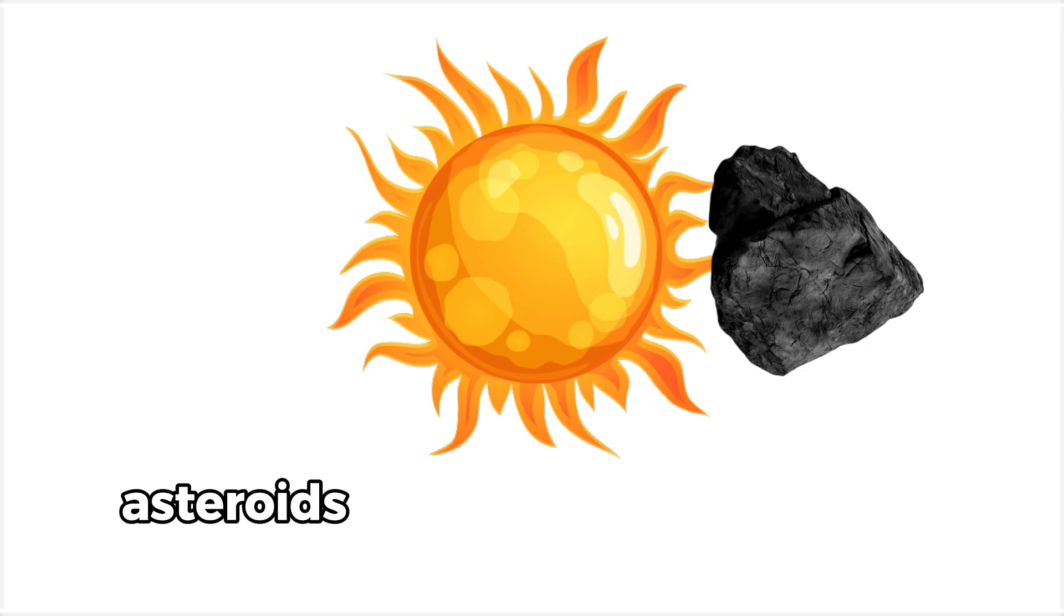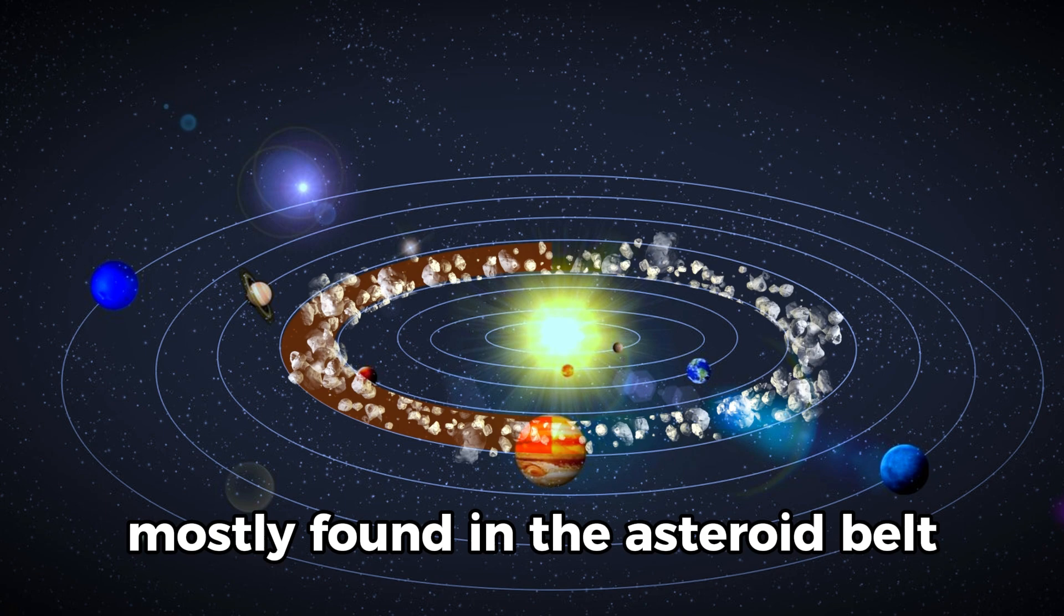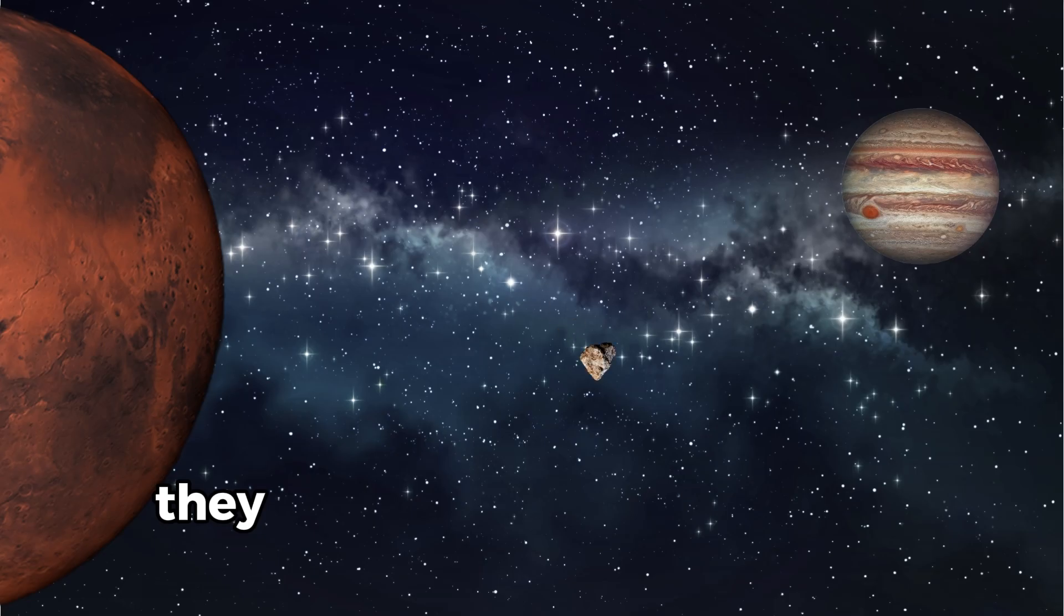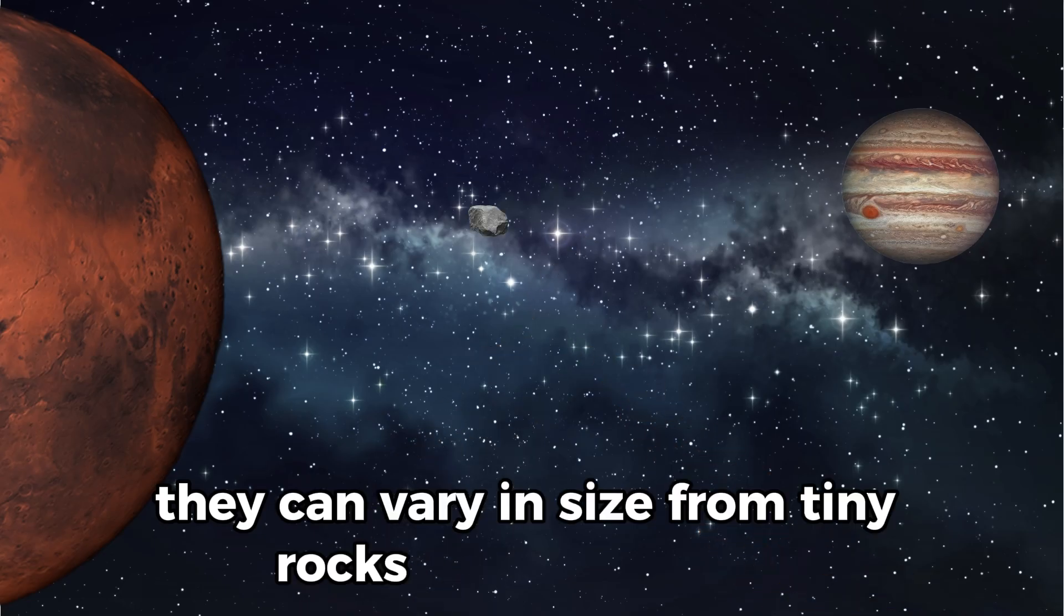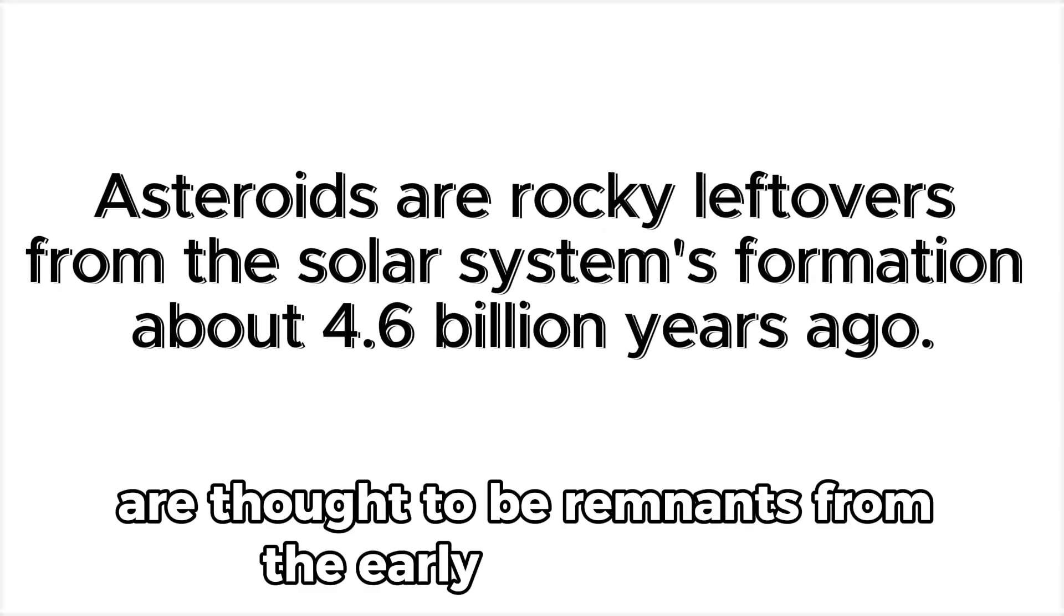Asteroids are small, rocky objects that orbit the Sun, mostly found in the asteroid belt between Mars and Jupiter. They can vary in size from tiny rocks to large bodies. Some asteroids are thought to be remnants from the early solar system.